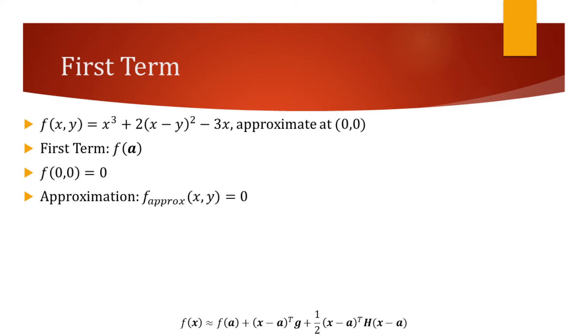We will find the approximation at the origin for the function at the top. As seen from the formula on the bottom, the first term is simply the value of the function at the point that we are trying to approximate. The value of our function at the origin is zero.